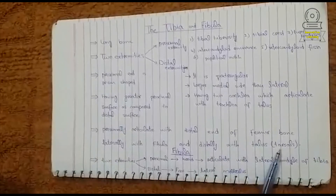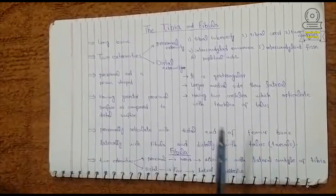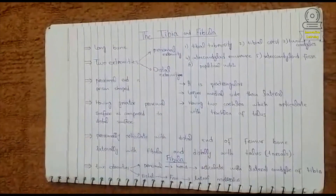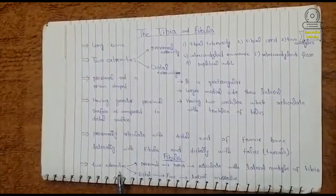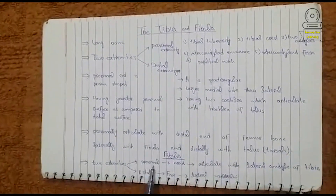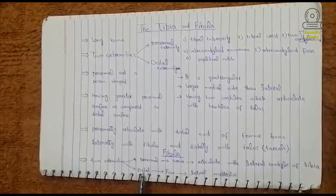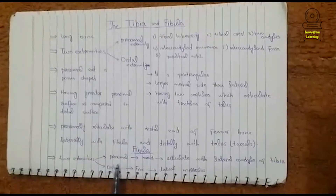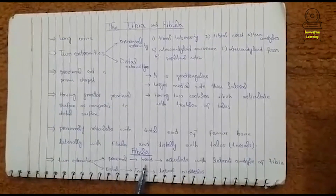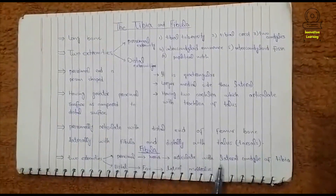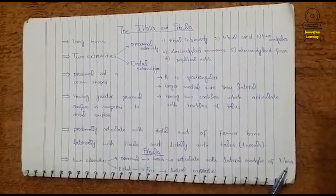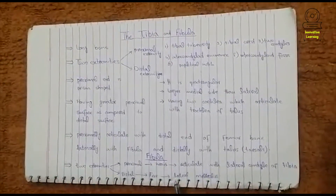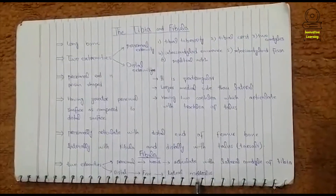Now we will discuss the fibula bone. The fibula bone has two extremities: the proximal extremity and the distal extremity. On the proximal extremity, a head is present which articulates with the lateral condyle of the tibia bone. The distal extremity is free and is called the lateral malleolus.